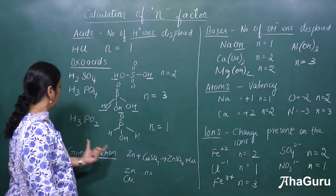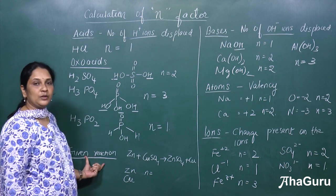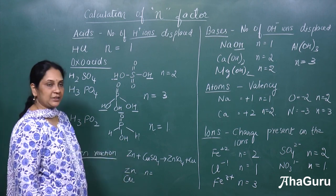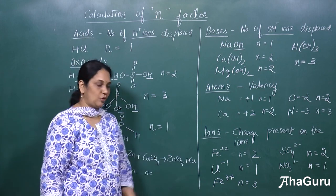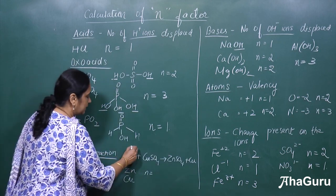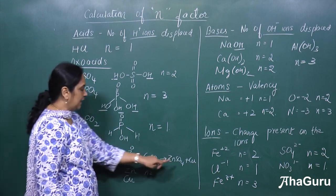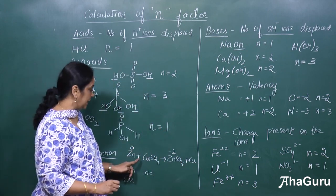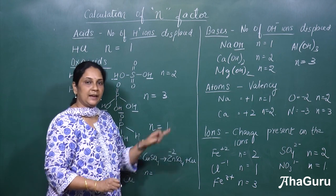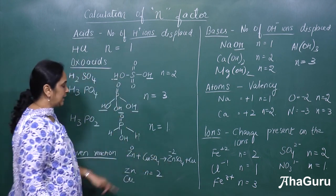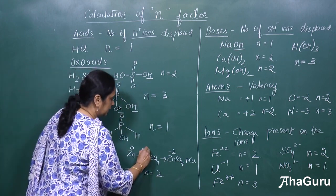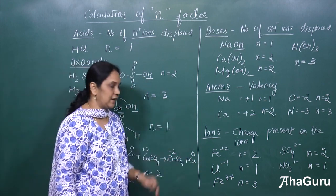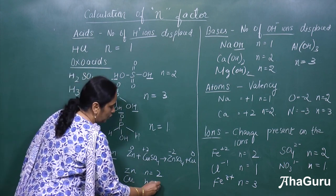Now let us calculate the N factor for an element in a reaction. Take: Zn + CuSO₄ → ZnSO₄ + Cu. For zinc, the oxidation state goes from 0 to +2, so the number of electrons transferred is 2 — the N factor for zinc is 2. For copper in CuSO₄, the oxidation state goes from +2 to 0, so electrons transferred are 2, and the N factor for copper is also 2.